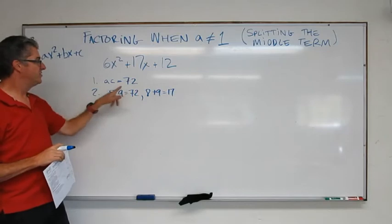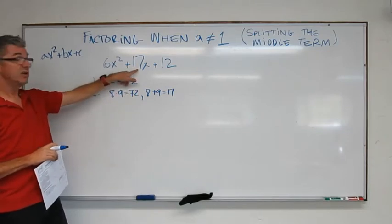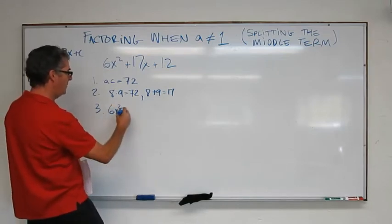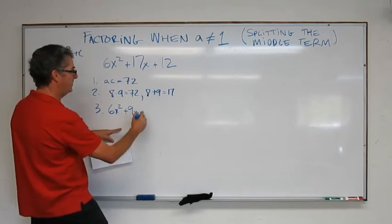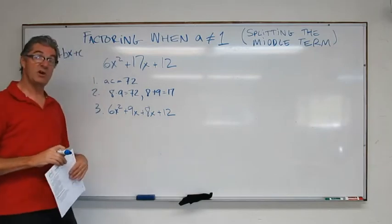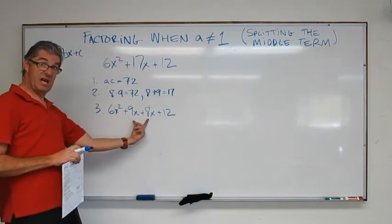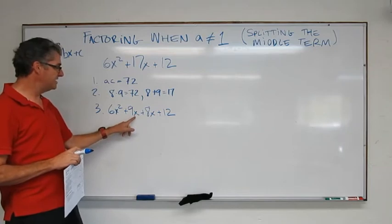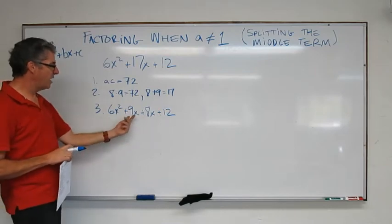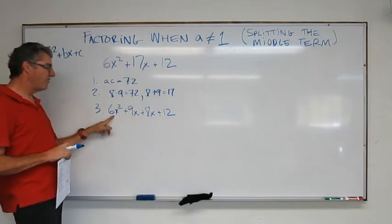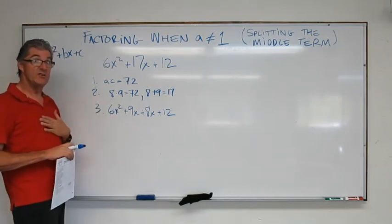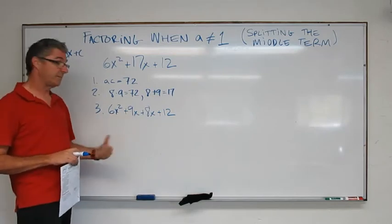So 8 and 9 are the two numbers that we're going to split our middle term with. So step 3 is going to be 6x squared plus 9x plus 8x plus 12. Now a question might be occurring to you. How did I decide whether to put the 9x here or put the 9x there? And what I did is when I looked at 8x and 9x, I tried to figure out what the best factorization would be with this term. And I noticed that there's a 3 in both of these, so that makes it a little bit more direct. The truth is you can do it either way, and it should work. Okay?